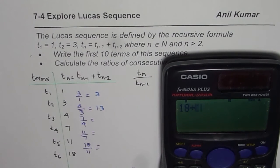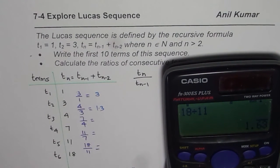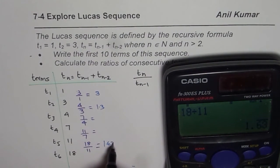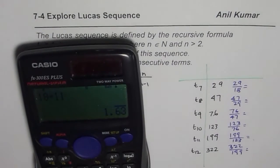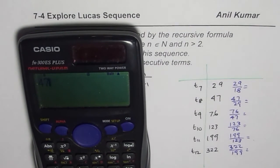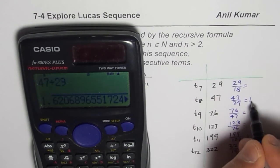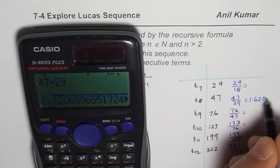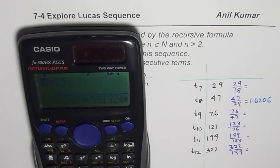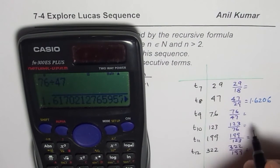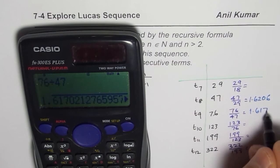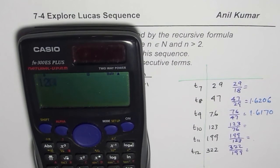we will do 18 divided by 11 equals to 1.63. You can fill up all other values, 47 divided by 29 equals to, in decimals, 1.6206, and then we have 76 divided by 47, which is equal to 1.6170, 123 divided by 76.